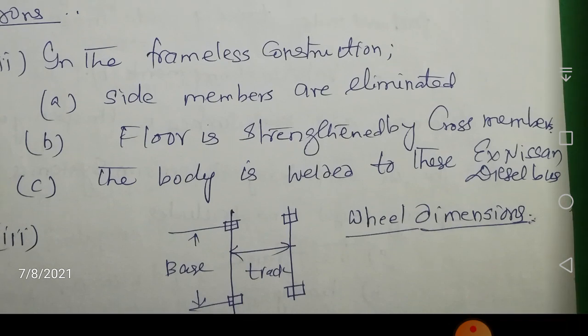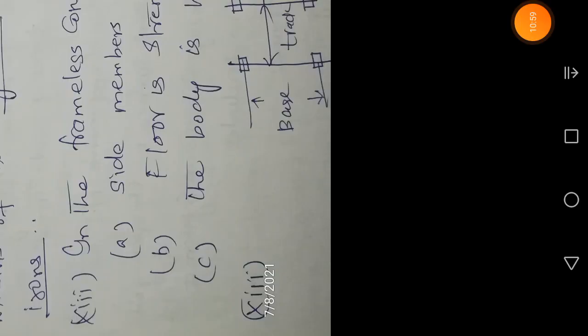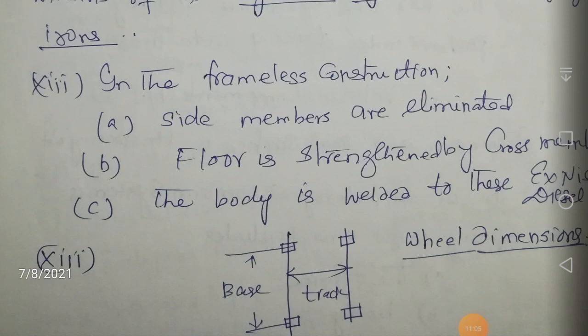Regarding wheel dimensions: in a top view, the horizontal dimension between the front and rear wheels on the same side is called the wheelbase. The dimension between the left wheels and right wheels is called the track. All these dimensions are in millimetres.